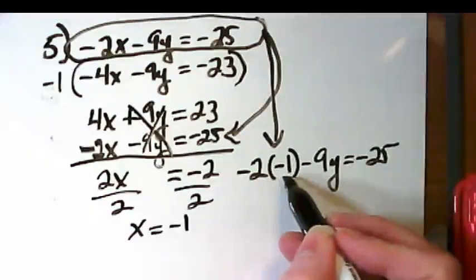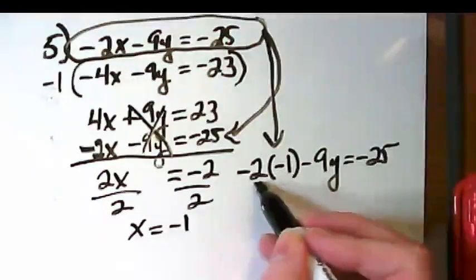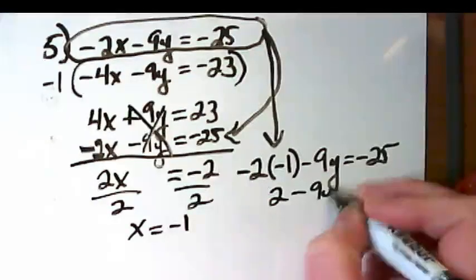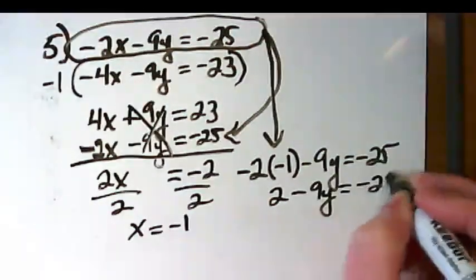I've plugged in negative 1 where the x goes. Negative 2 times negative 1 is positive 2 minus 9y equals negative 25.